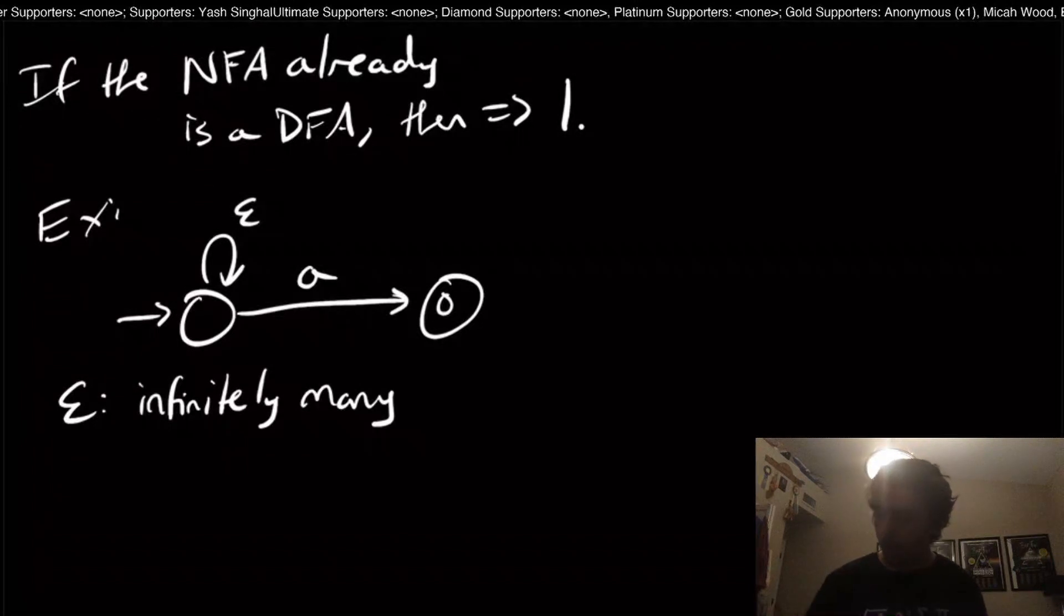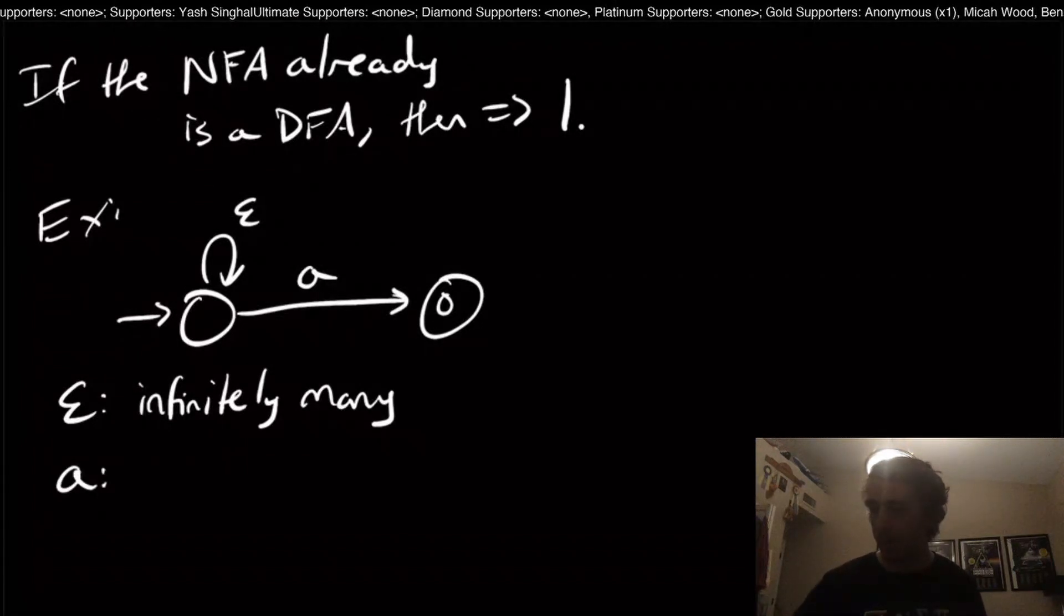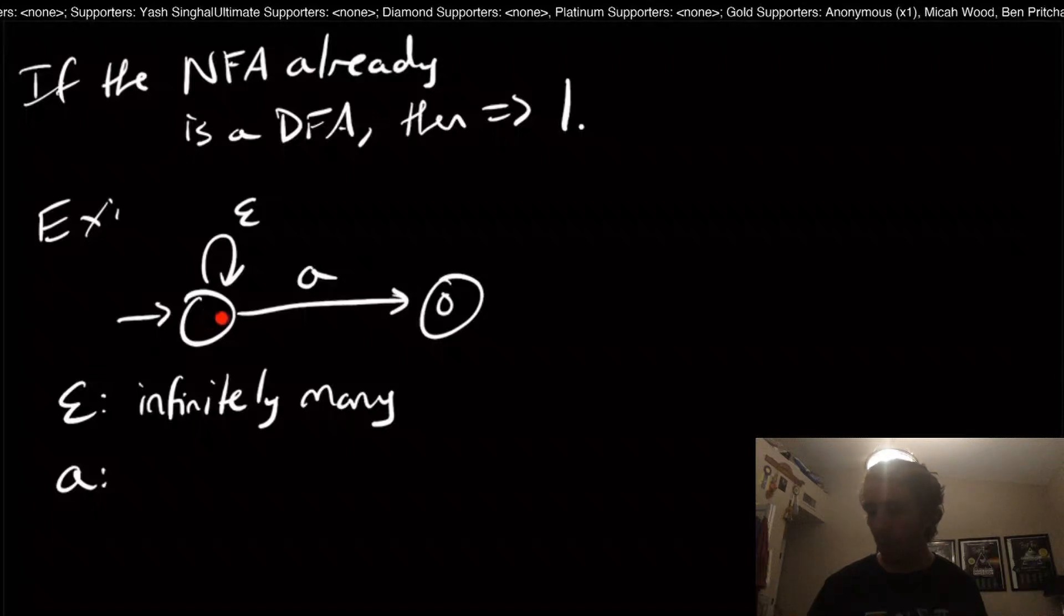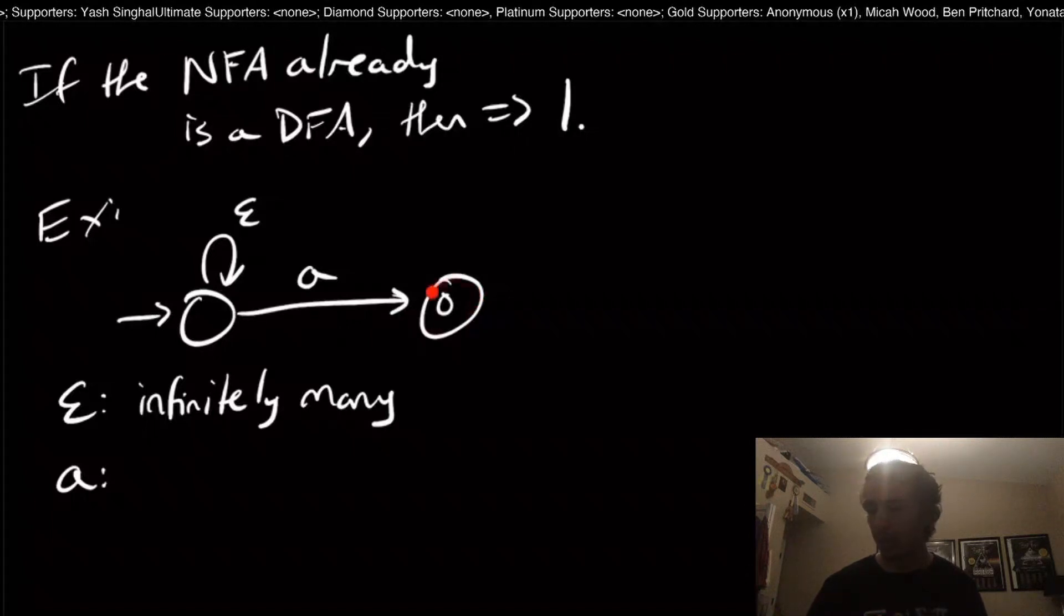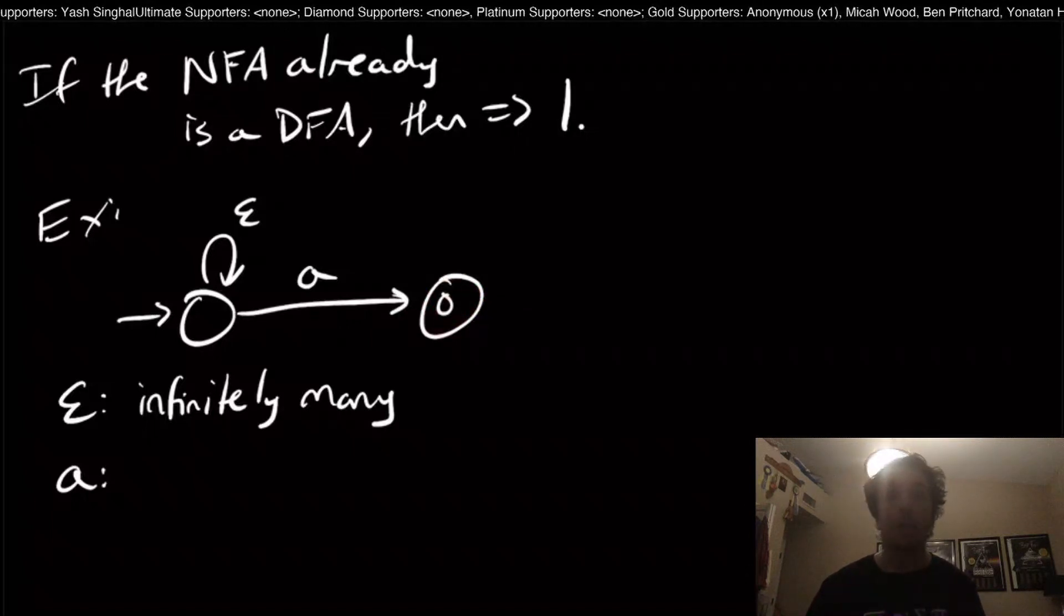But what about for the string A? You may think, okay, the string A, we start here in the start state, therefore, we have to take this transition to go to the accept state right here. And you're right, we do have to do that.